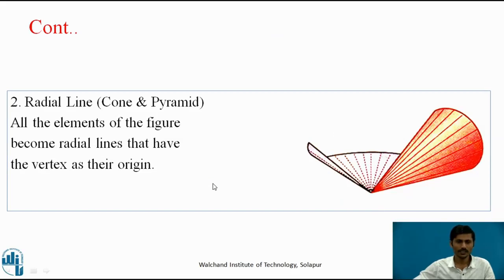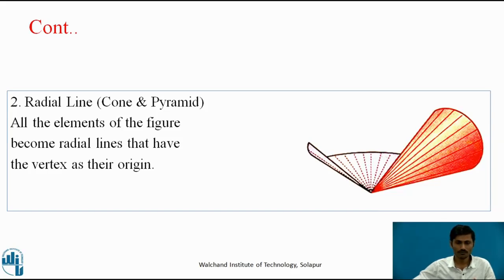The second method is the radial line method. It is used for cone and pyramid. These imaginary lines on the curved surface of the cone are called generators or elements. The base of a cone is a right circle. We need to keep the cone on the development plane such that one element is on the development plane, and then unroll the cone surface so that all the elements or generators are on the development plane. That figure is called the development of the cone.